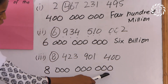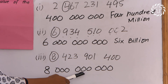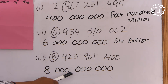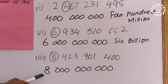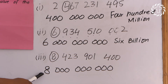Unit, tens, hundreds, thousands, ten thousands, hundred thousands, million, ten million, hundred million, billion. So we will say that the place value of this eight is eight billion.